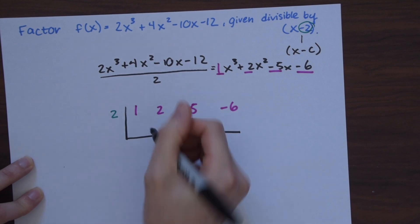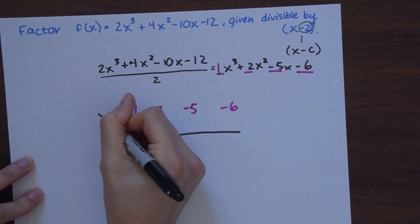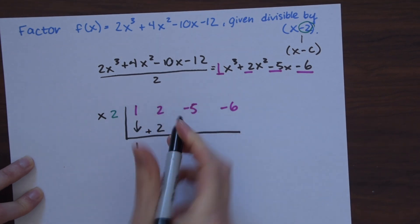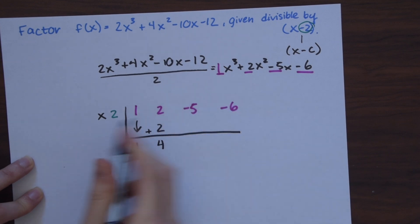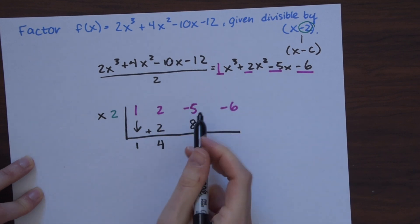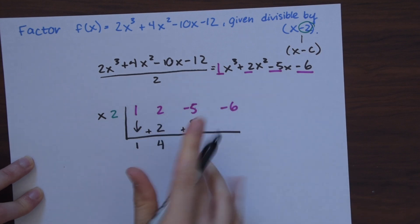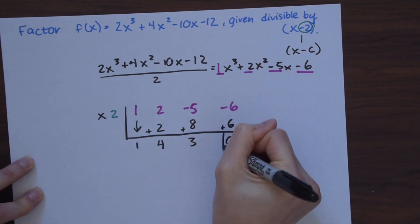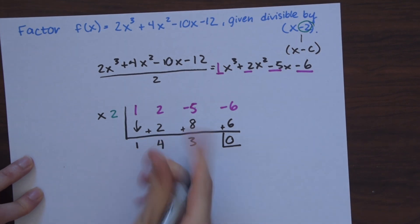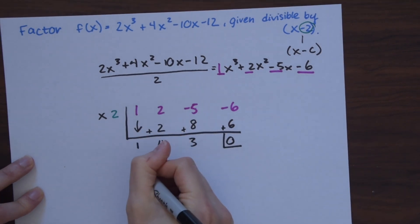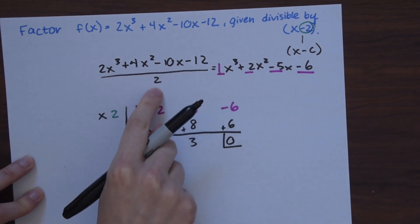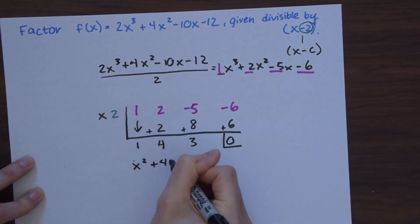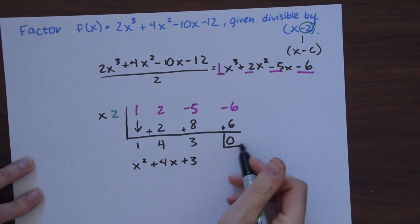We perform our synthetic division: bring down the 1, multiply 1 times 2 to get 2, add to get 4. Then 4 times 2 is 8, and 8 plus negative 5 is 3. Then 3 times 2 is 6, and negative 6 plus 6 is 0. So our polynomial divided by x − 2 equals x² + 4x + 3, with a remainder of 0.